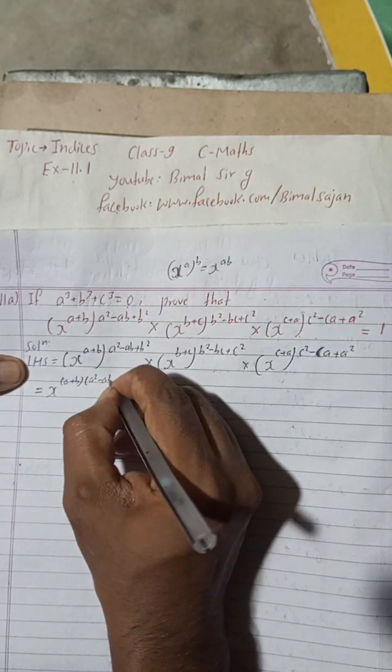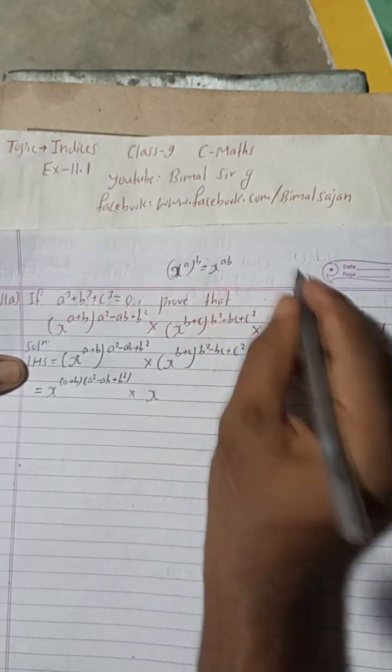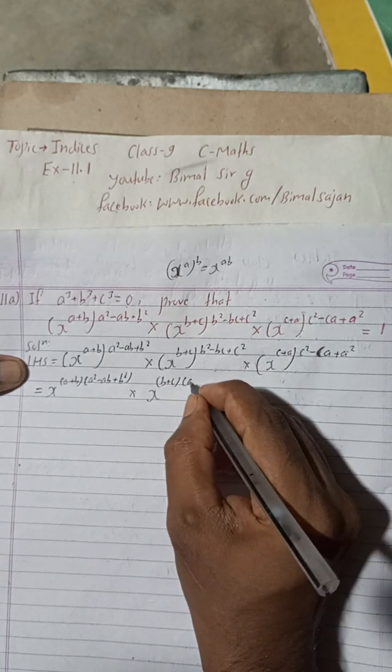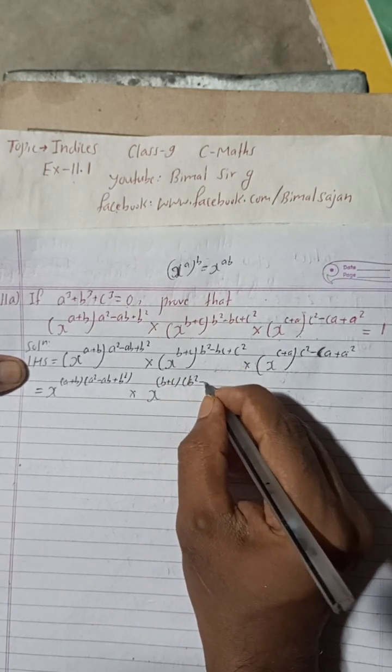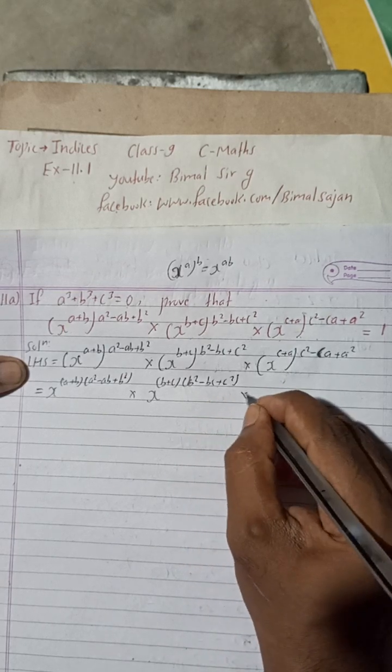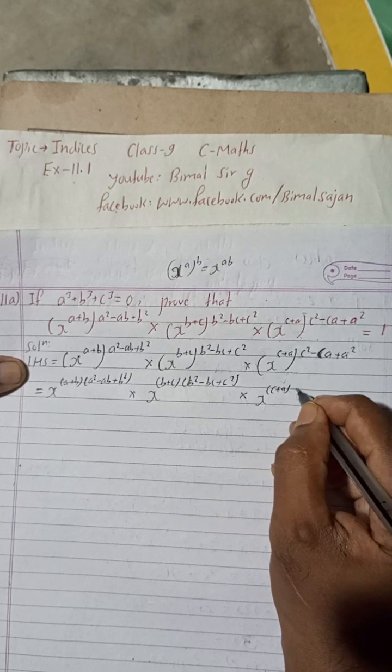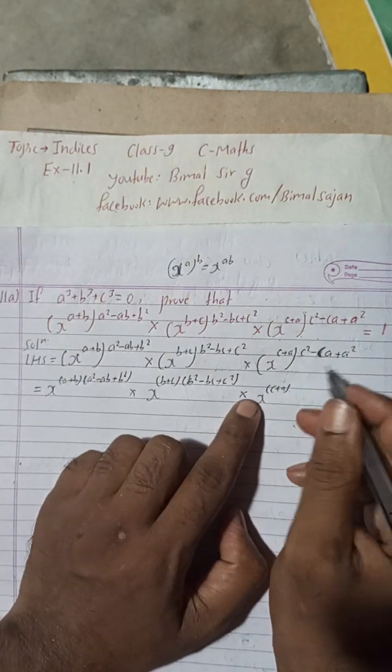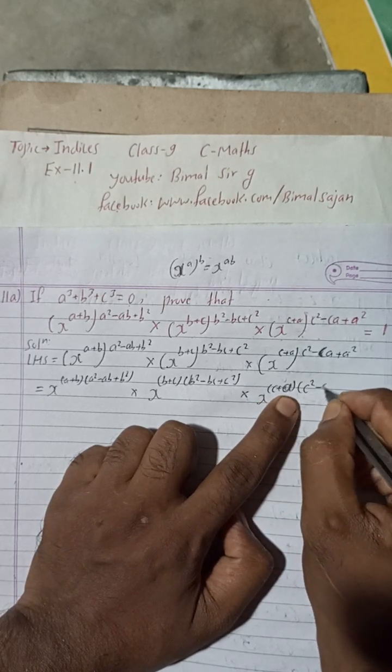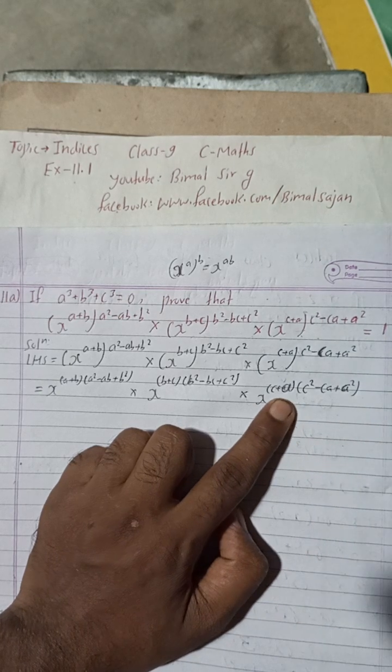This is power, so this is again multiplied, this will be multiplied. So this will be a²-ab+b². In the same way here we can do x^(b+c) and this is power, then it is multiplied, that is b²-bc+c². Again into x to the power, this is c+a, and then c²-ca+a².